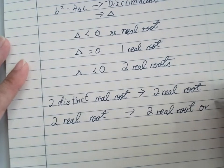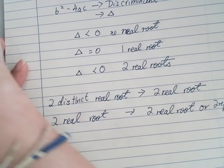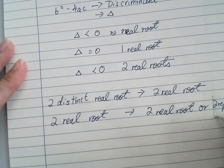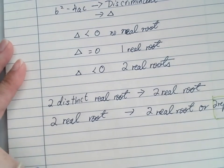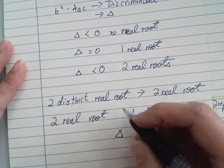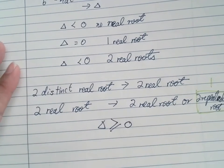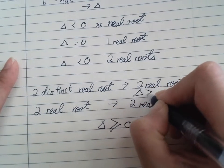Or two repeated root. And in that case, two repeated root is one real root, which is the discriminant have to be bigger or equal to 0. The 0 is included. For that one, bigger than 0.